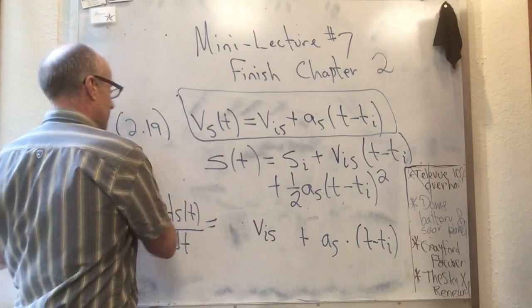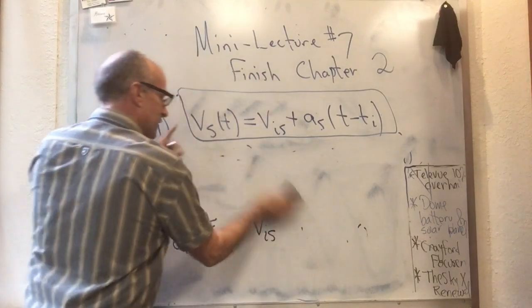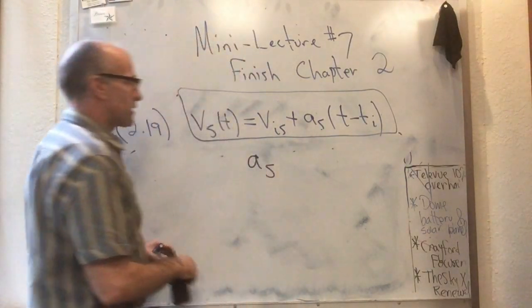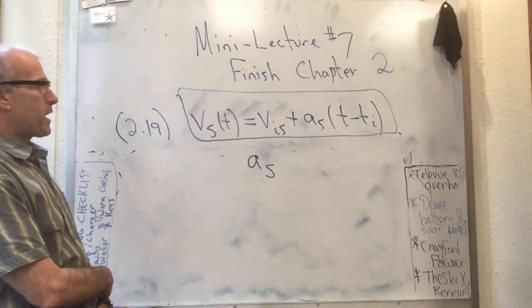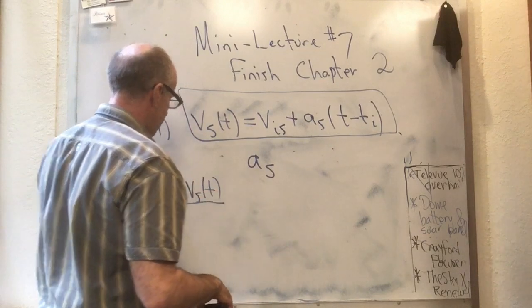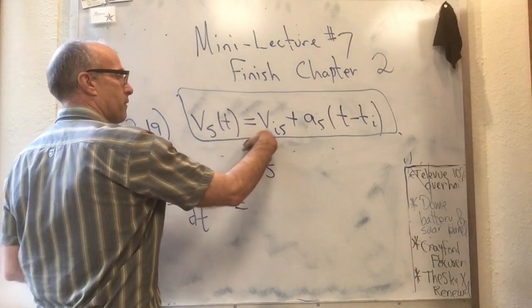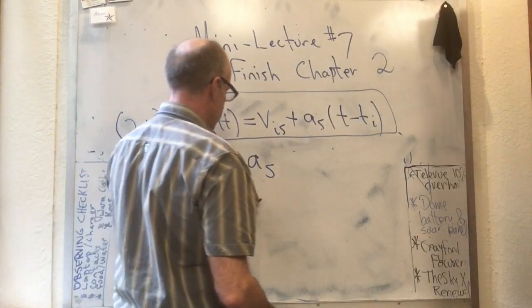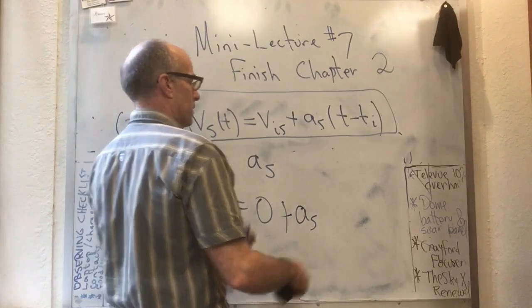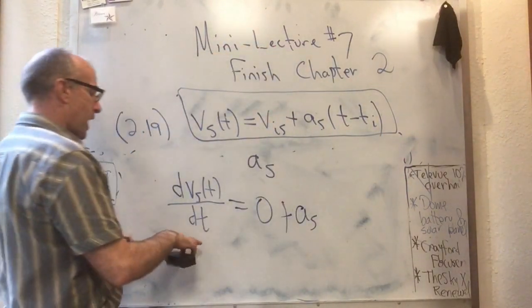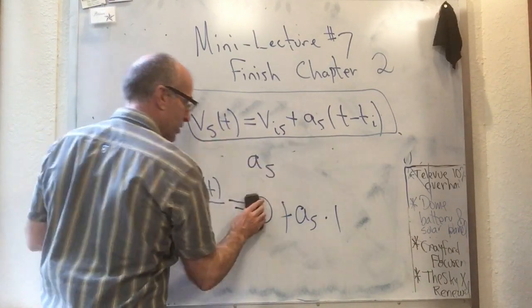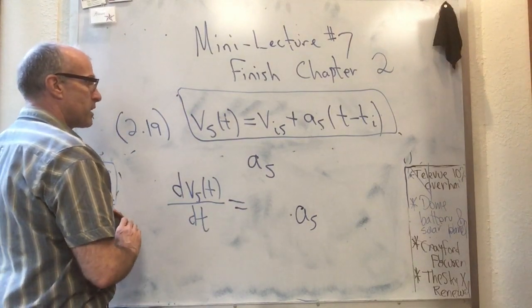Now let's check: does this velocity function give us the acceleration function we wanted? The acceleration should correspond to constant acceleration — just the number a_s. Is the slope of v_s(t) equal to a_s? Let's try: dv_s(t)/dt. The derivative of v_is is zero since it's a constant. The term a_s times (t minus t_i) has multiplier a_s, and the derivative of (t minus t_i) with respect to t is one. So dv_s(t)/dt = a_s, which is exactly what we needed for constant acceleration.